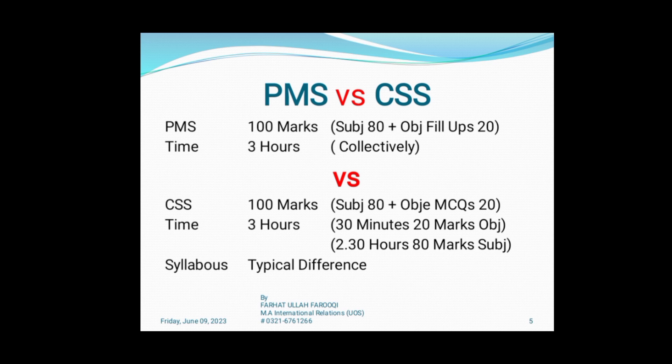In CSS, the subjective portion is 80 marks, and the objective is MCQs. In PMS, fill-in-the-blanks are used instead of MCQs. The objective part is 20 marks and takes 30 minutes, while the remaining paper — 80 marks subjective — takes 2 hours and 30 minutes.